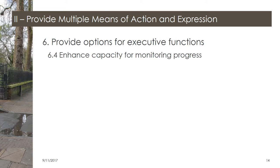Within the section to provide multiple means of action and expression, we find Principle 6.4, which covers enhancing capacity for monitoring progress. Give students the tools they need to understand their progress in successfully achieving the outcomes, objectives, and/or goals for the course. Use the Canvas gradebook and keep it up to date. Build and utilize rubrics. Create checklists. Give annotated examples. Encourage self-assessment. Prompt students to identify the feedback and/or advice they need. And communicate how and when grading takes place.